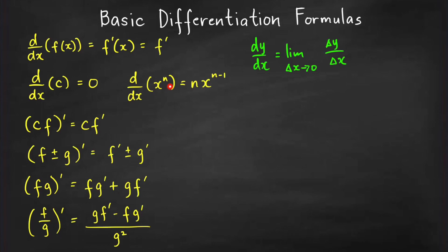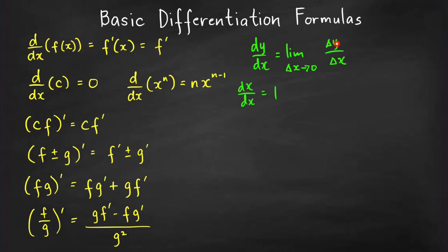The second formula tells us that the derivative of a power function x raised to n (where n is any real number) is equal to n times x raised to n minus one — you bring down the power and subtract one from the exponent. For example, the derivative of x with respect to x equals one, because delta y over delta x equals delta x over delta x, and the limit of one as delta x approaches zero is one.